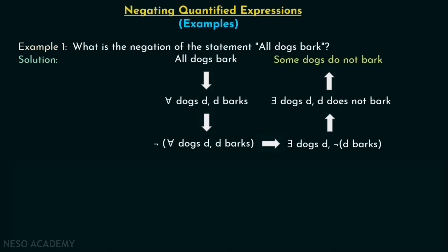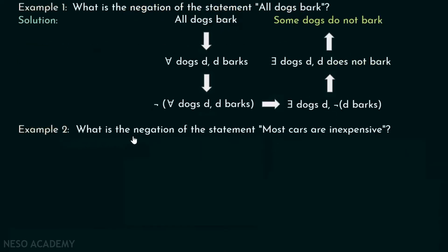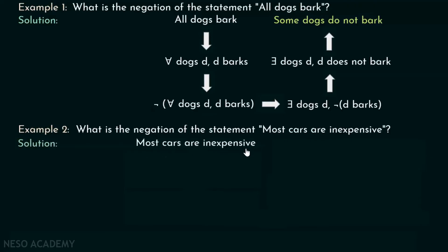Now let's consider example number 2. What is the negation of the statement 'most cars are inexpensive'? Here we are talking about most of the cars, not all of the cars. So we will need a there-exists quantifier.